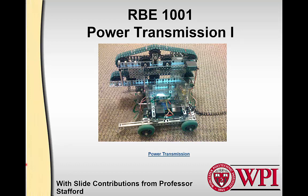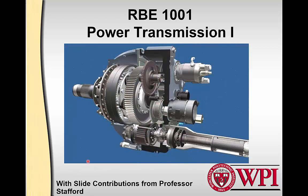In this video, we're going to review some of the material covered in the first power transmissions video, look at a couple of examples, and review the power transmissions assessment. This is an interesting transmission from an Allison 5,000 horsepower gas turbine used on the Hercules C-130 — a turboprop.